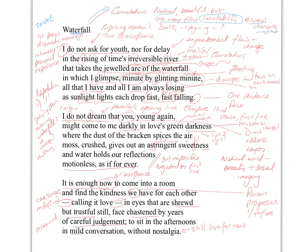We have this first-person speaker sharing a personal experience, and the first thing said is this kind of surprising assertion which establishes a tone of wise acceptance for the poem. 'I do not ask for youth' — if you think of humanity and what we tend to want, to be young forever, that sets out the speaker's idea and the main premise of her observations: she knows time isn't going to go backwards, just like she knows the waterfall is only moving in one direction. 'I do not ask for youth, nor for delay in the rising of time's irreversible river that takes the jeweled arc of the waterfall in which I glimpse minute by glinting minute all that I have and all that I am always losing as sunlight lights each drop fast fast falling.'